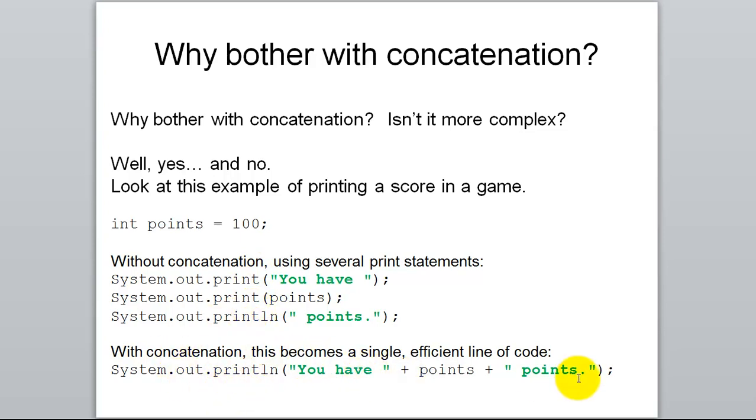With concatenation, you could join all of it together into one single efficient line of code that just reads you have, and then we concatenate onto that the number of points, and then we concatenate onto that the final word points. So it inserts 100 in for the variable and puts it all together in one string and prints that to the screen. So now we can handle that simple task with just one piece of code.